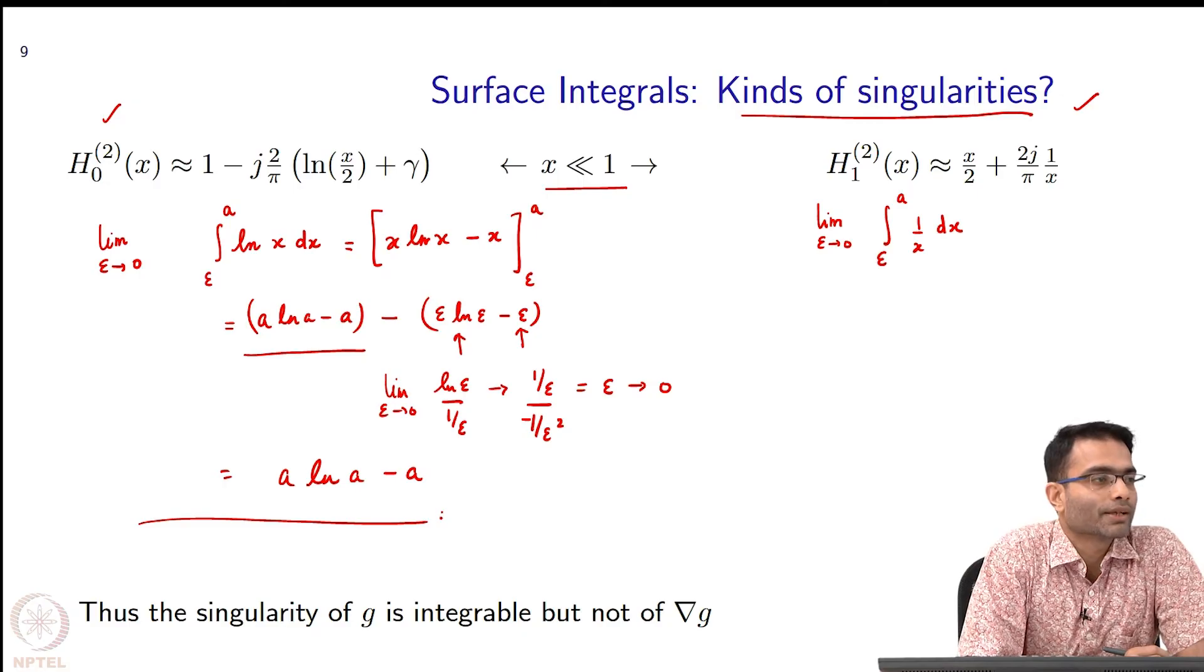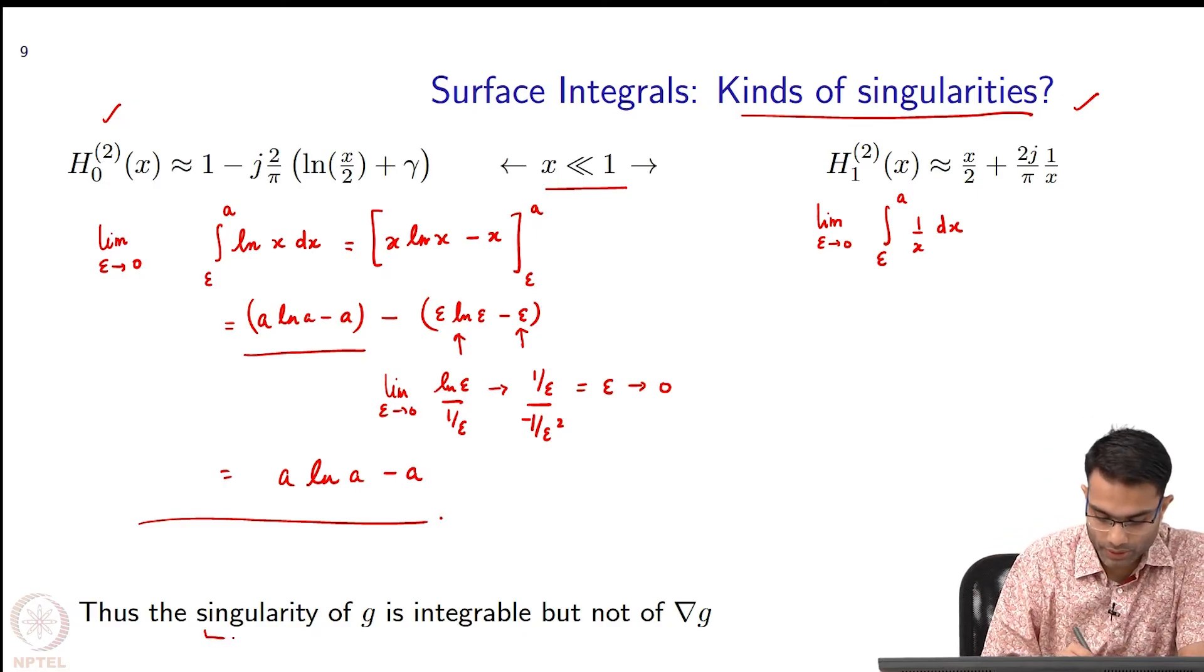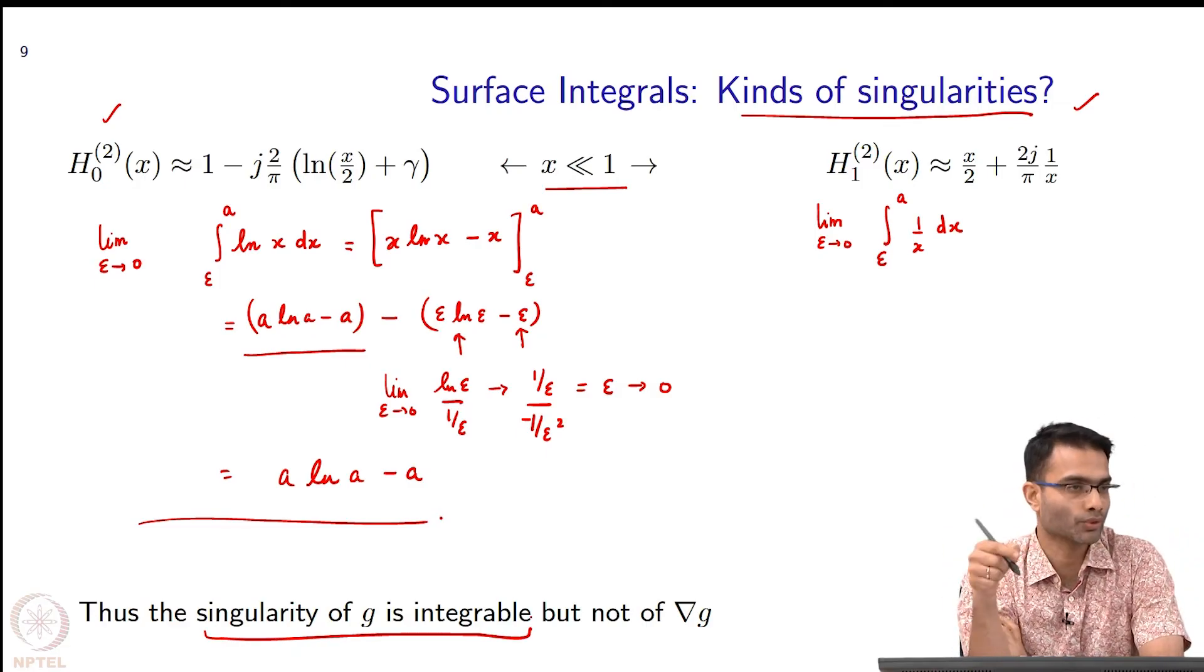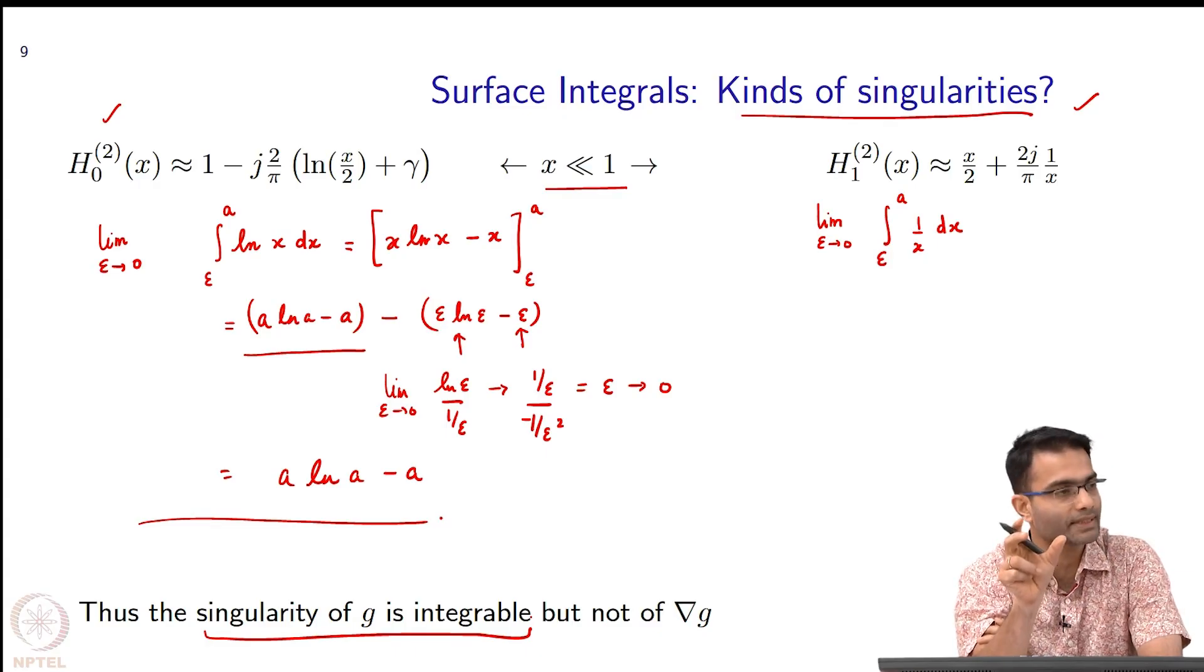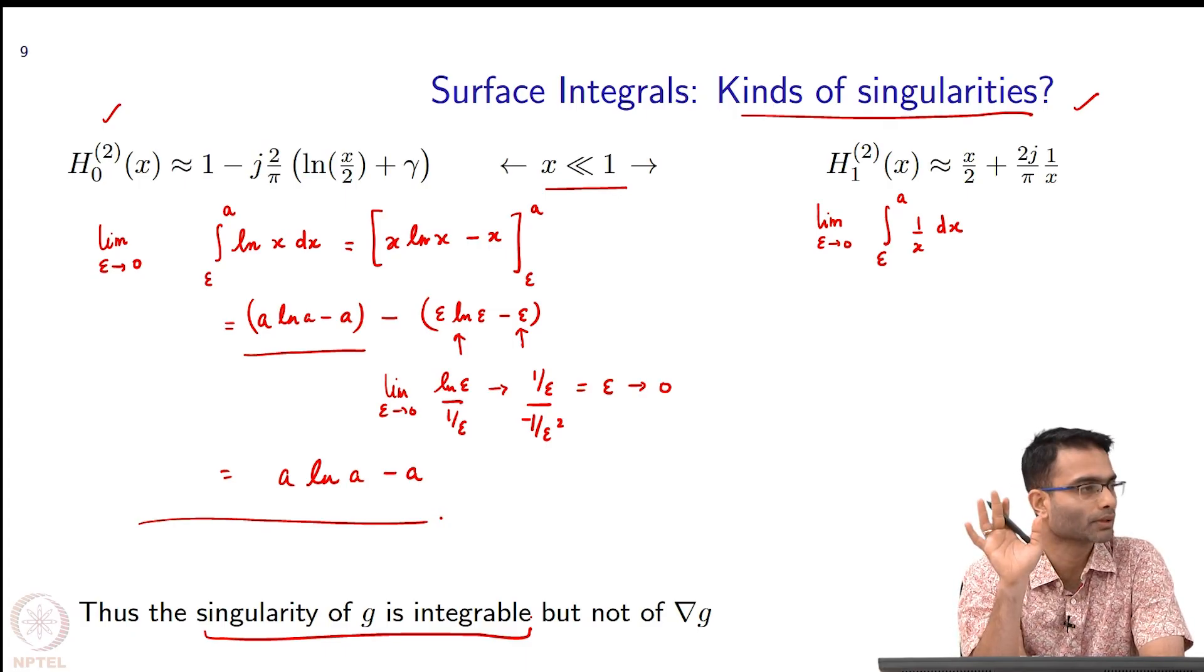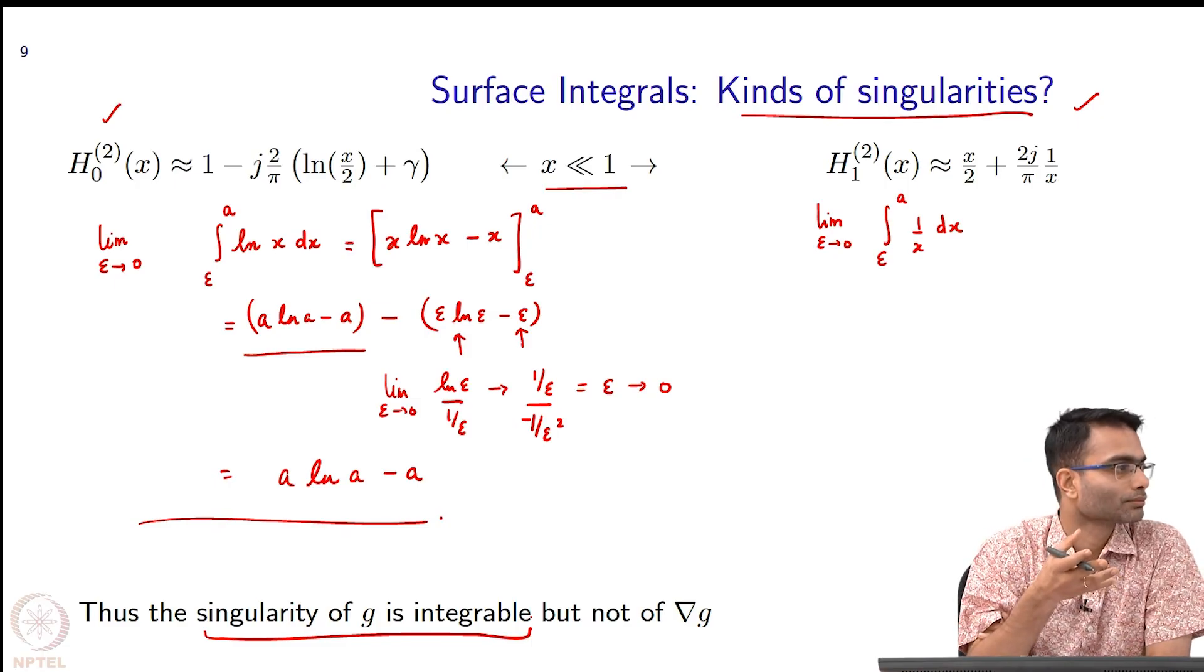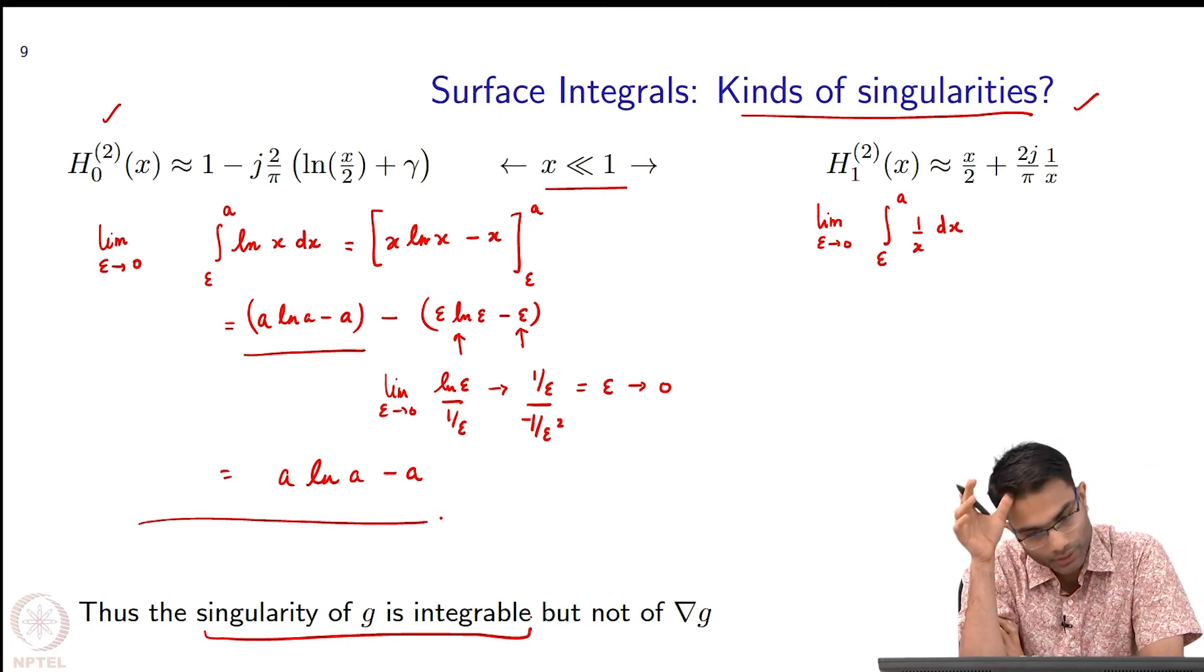This singularity is what is called integrable. The singularity of G is integrable. When I go back into my evaluating those method of movements terms, wherever there was a G term, there is no problem even if the argument rho is tending to 0. Because you can see the integral is finite even though the function is blowing up. It is like a delta function. Delta function is blowing up, but it is integral is finite. That is a singularity, but it is a integrable singularity.